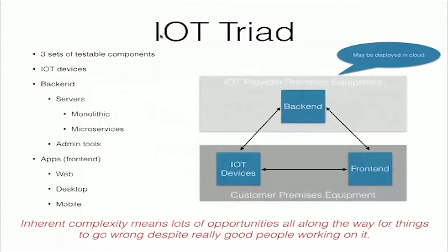First let's talk about motivation. We have the IoT triad, which is the three sets of testable components. We have the IoT devices, which are embedded systems out in the field. We have the back end, which consists of servers — that could be monolithic servers, that could be microservices — and there will probably be a series of admin tools as well, running in the back end and perhaps data mining applications. And then we have the front end apps, which are the web, desktop, and mobile apps that your users are using directly.